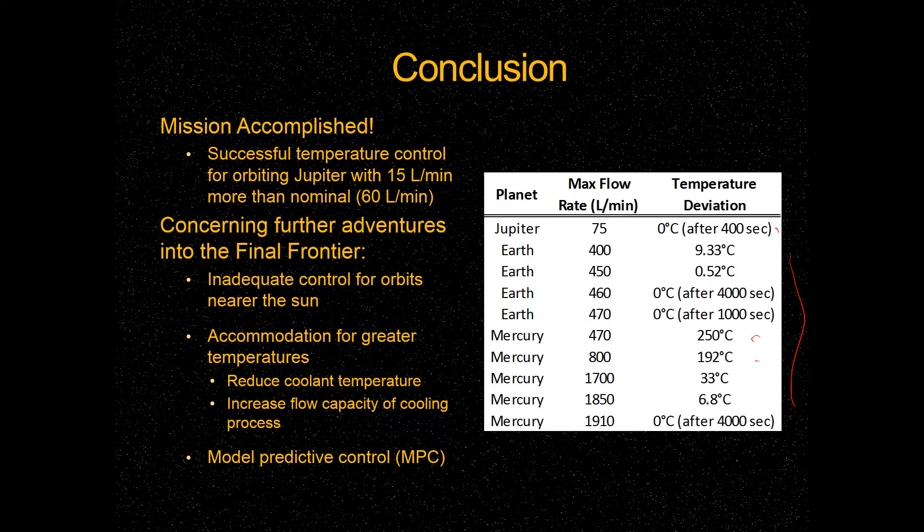Another thing we could do to improve accuracy is to use model predictive control as we assume the system was linear. However, beyond our steady state bounds, it would obviously be nonlinear, and the model predictive control would improve the accuracy of our system. Any questions?